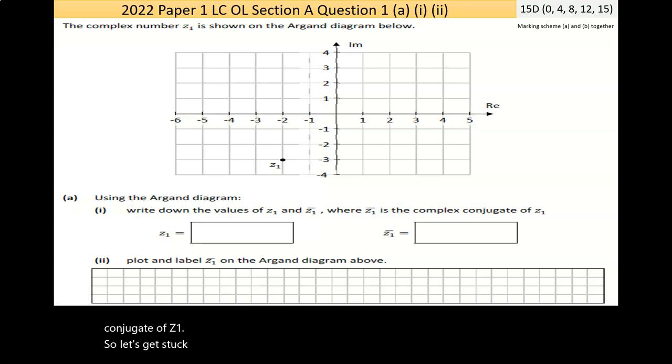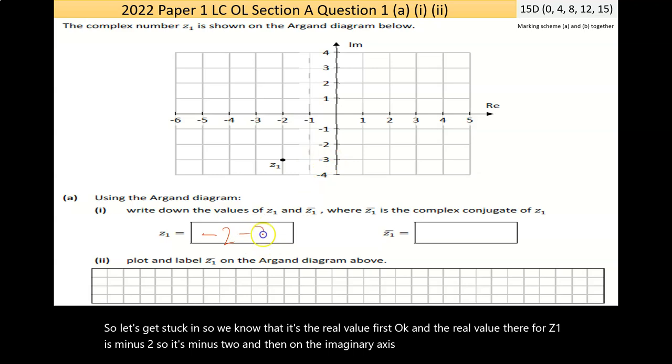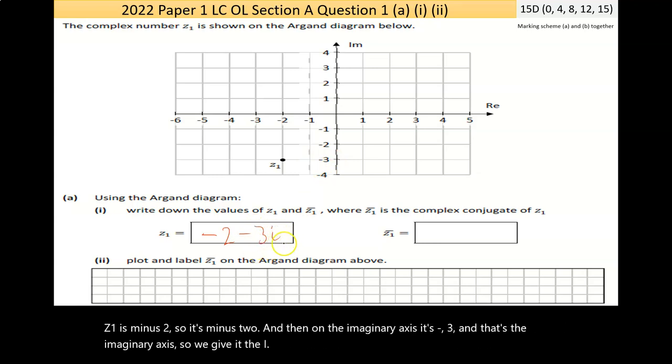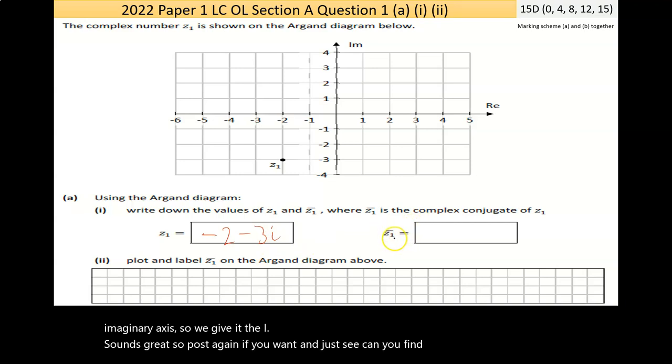So let's get stuck in. We know that it's the real value first, and the real value there for Z1 is minus 2. So it's minus 2, and then on the imaginary axis it's negative 3, and that's the imaginary axis so we give it the i. So that's great. Pause again if you want and just see can you find the conjugate of Z1?